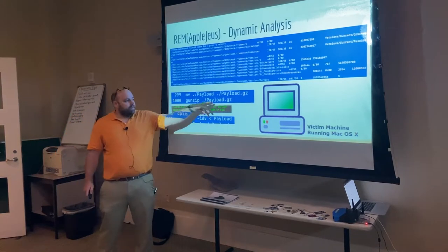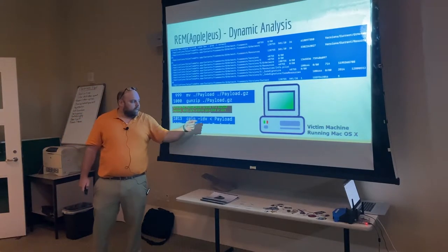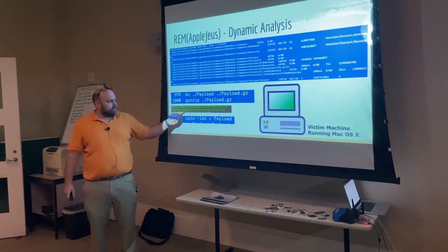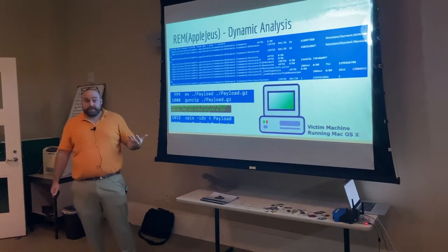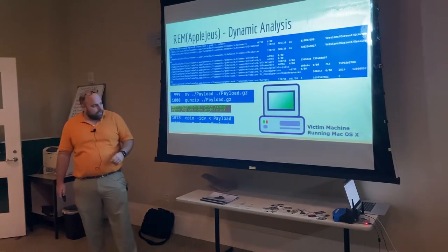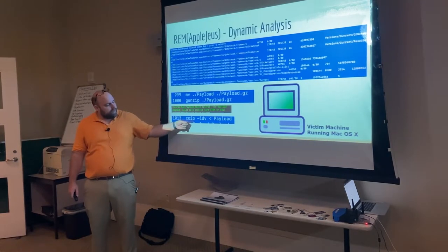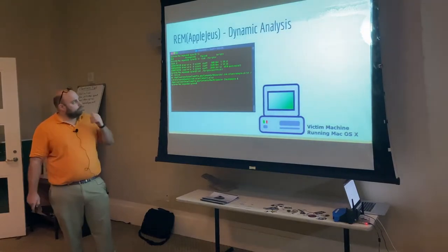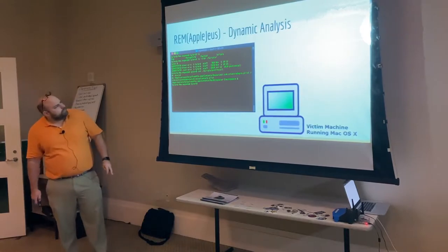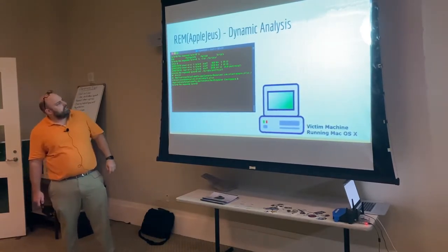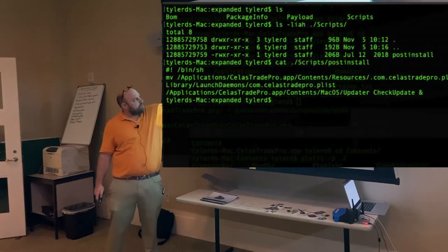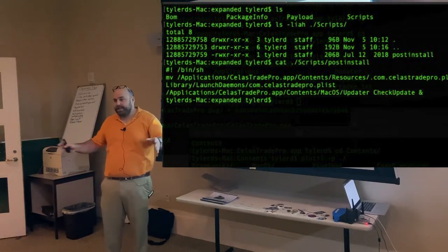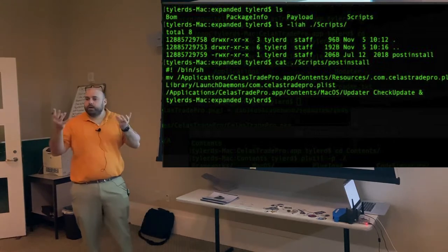Now we're greeted with the contents of the package. Inside there's a scripts folder, and looking inside that I see a post-install file. If I had double-clicked, all this would have just happened automatically. We're controlling each step so we know what's popping out on our system. The post-install script would have created, underneath Applications, a shell that moved the CList Trade Pro app, then added a reference to a plist file into launch daemons.